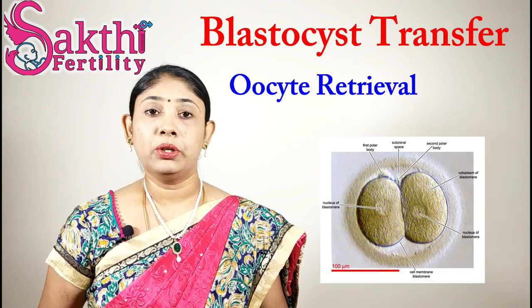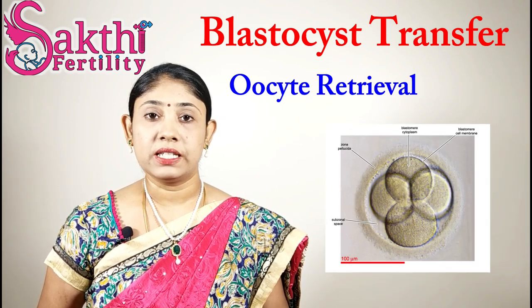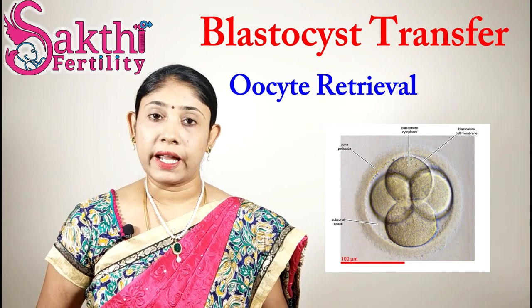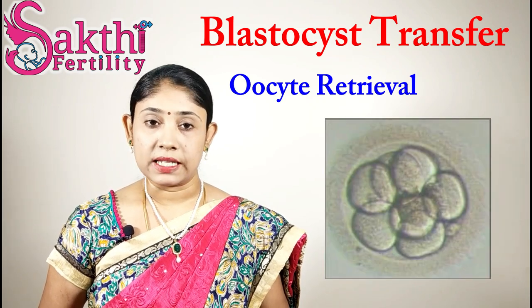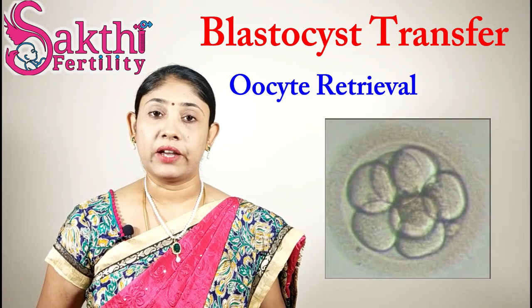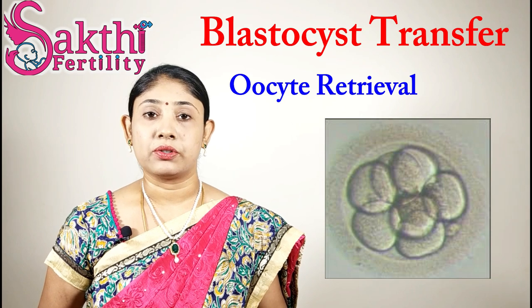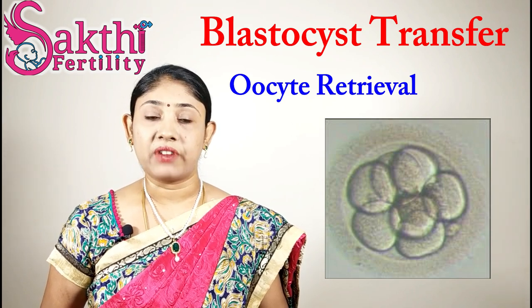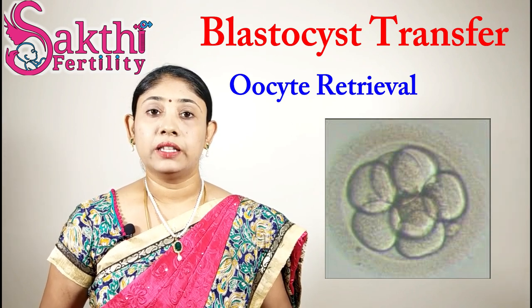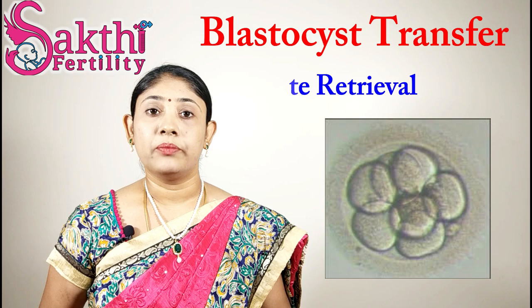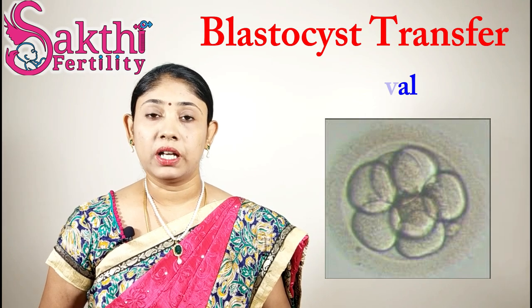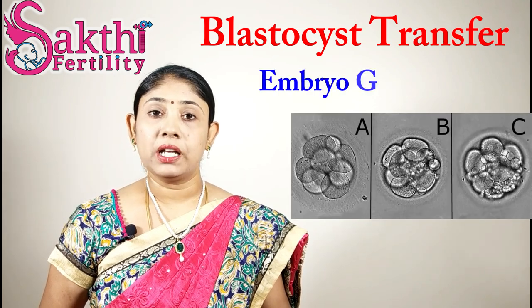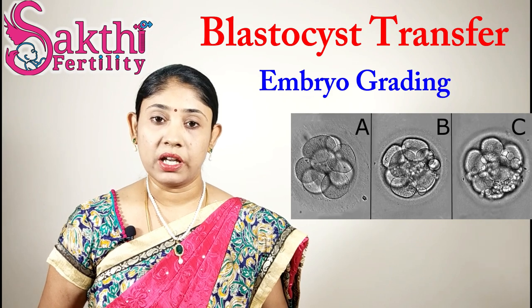On day 2 there will be a 2 to 4 cell stage embryo, and on day 3 there will be an 8 to 10 cell stage. On day 5 is the blastocyst stage. Depending upon the size, shape, and fragmentation, the embryos are classified into grade 1, grade 2, and grade 3 depending upon their quality.